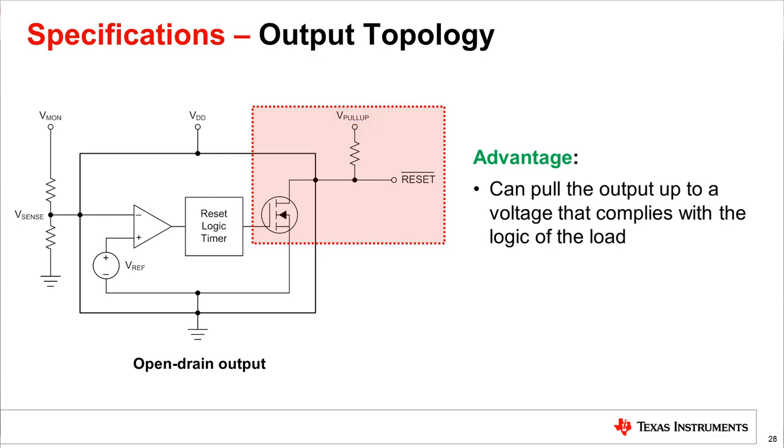For example, if the VDD is 3.3 volts but the load can only accept up to 0.8 volts, then by using an open drain supervisor, the V pull-up voltage can be set to 0.8 volts to comply with the load.